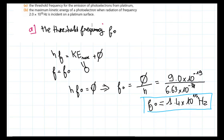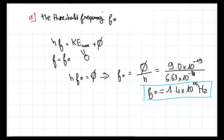Question B: find the maximum kinetic energy of a photoelectron when radiation of frequency 2.0 times 10 to the power of 15 Hz is incident on a platinum surface.